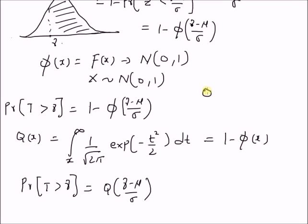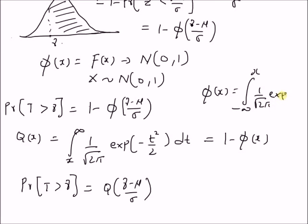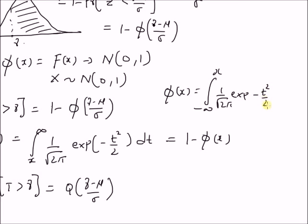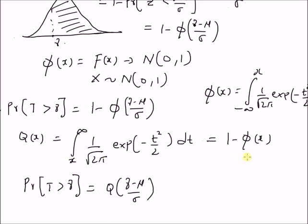Since phi of x is equal to the integral from minus infinity to x of 1 over square root of 2 pi times exponential of minus t squared by 2, dt, Q of x is equal to 1 minus phi of x. Therefore, the probability that t is greater than gamma is given by the value of the Q function at gamma minus mu by sigma. Thanks for watching.